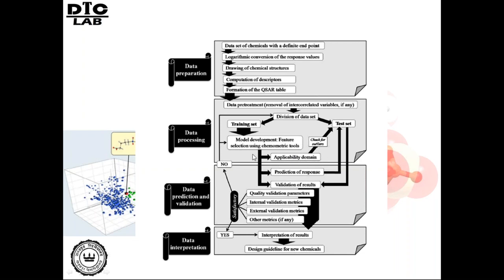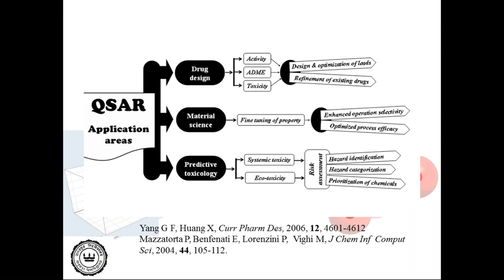There are different methods for judging model quality and predictability — one can apply different validation tools, both internal and external. Finally, once the model is validated and able to predict new chemicals, we can go for interpretation of results, which can guide design of new chemicals. There are diverse application areas of QSAR: starting from drug design for modeling biological activity, it can also be used to model different ADMET parameters — absorption, distribution, metabolism, and elimination — for example, CACO2 cell permeability, volume of distribution, cytochrome P450 metabolism enzyme inhibition, and clearance.